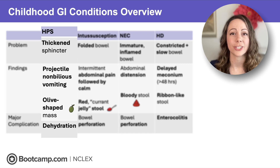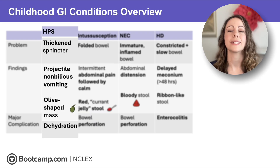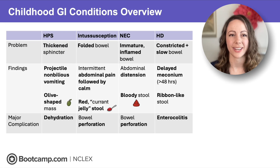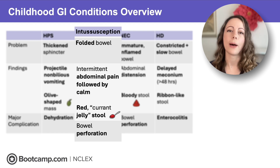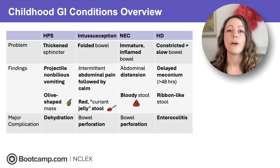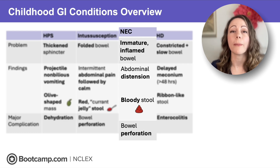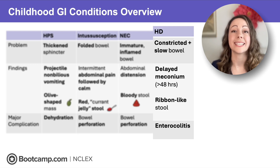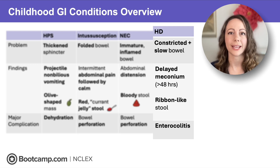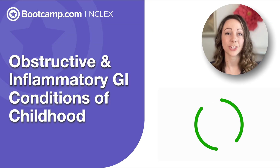Overview: Hypertrophic pyloric stenosis is a thickened sphincter causing projectile non-bilious vomiting and an olive-shaped mass — major complication is dehydration. Intussusception is a folded bowel causing intermittent abdominal pain followed by calm and red currant jelly-like stool — major concern is bowel perforation. Necrotizing enterocolitis is an immature inflamed bowel with abdominal distension and bloody stool — worry about bowel perforation in newborns. Hirschsprung disease is a contracted slow bowel with delayed meconium greater than 48 hours and ribbon-like stool — worry about enterocolitis. Now you've mastered obstructive and inflammatory GI conditions of childhood on the NCLEX.